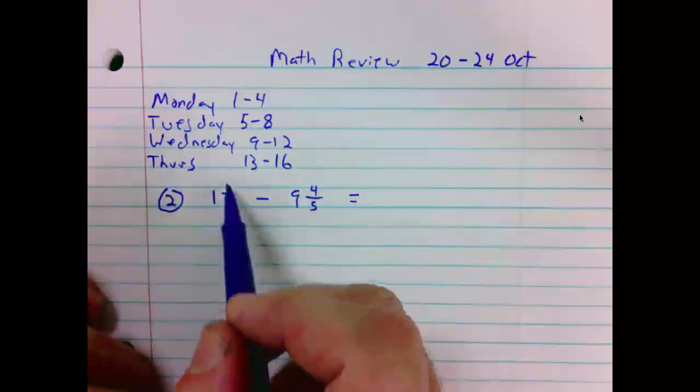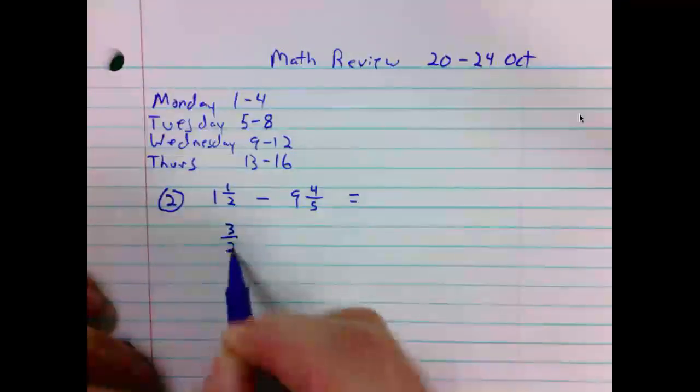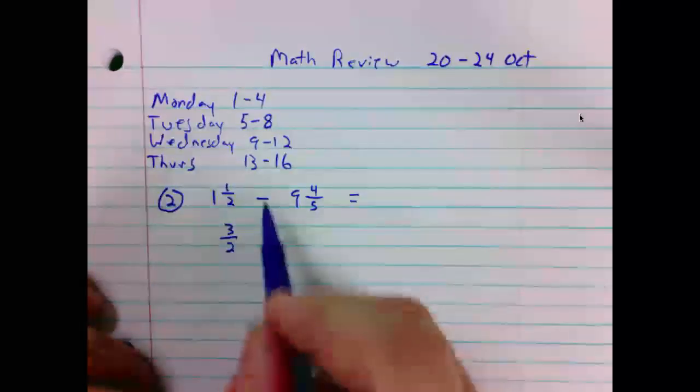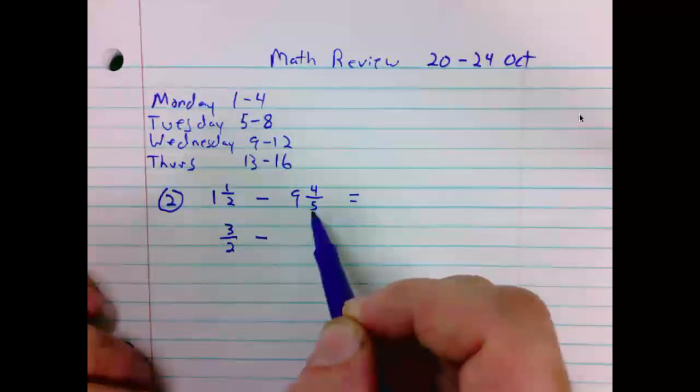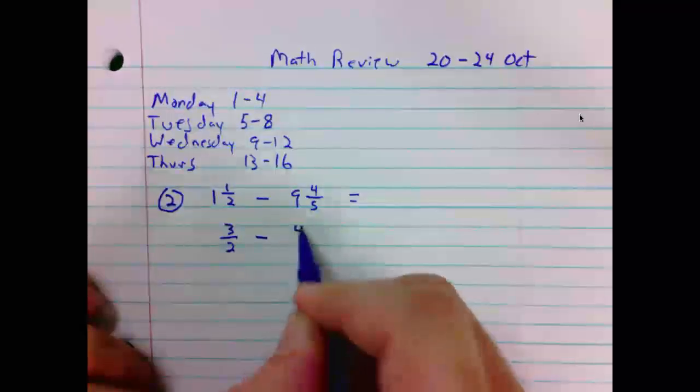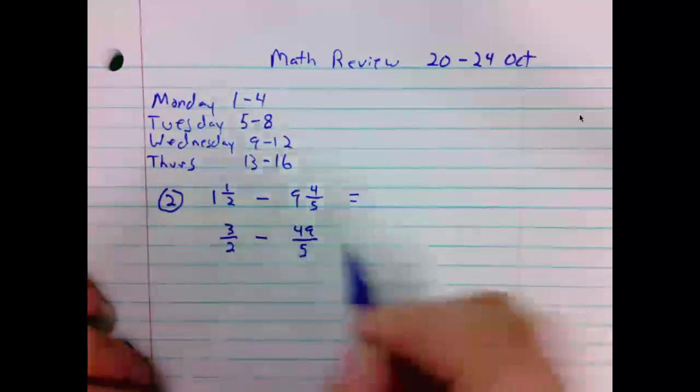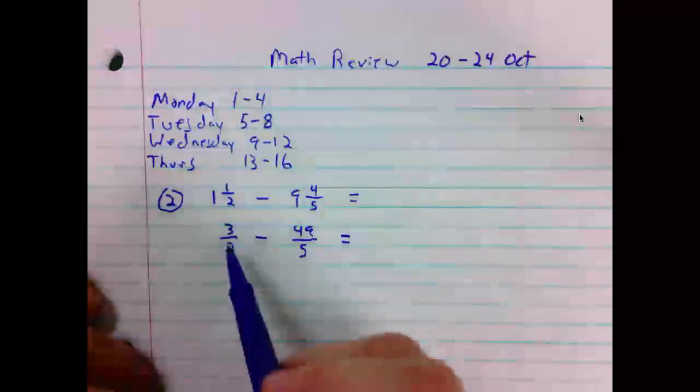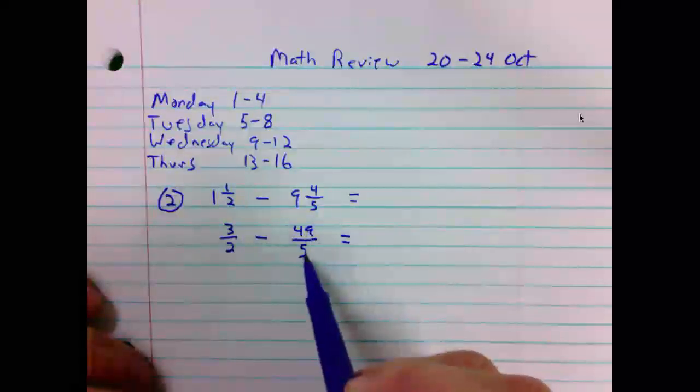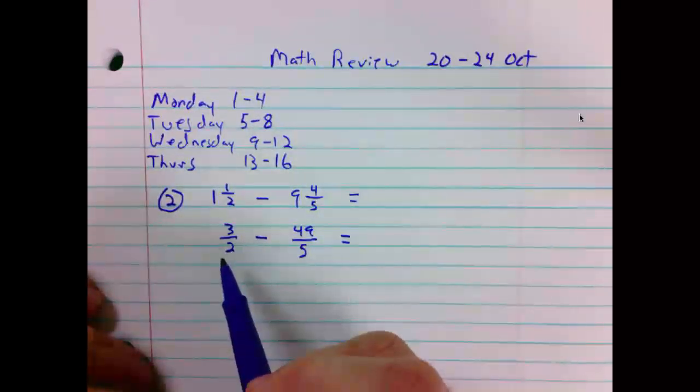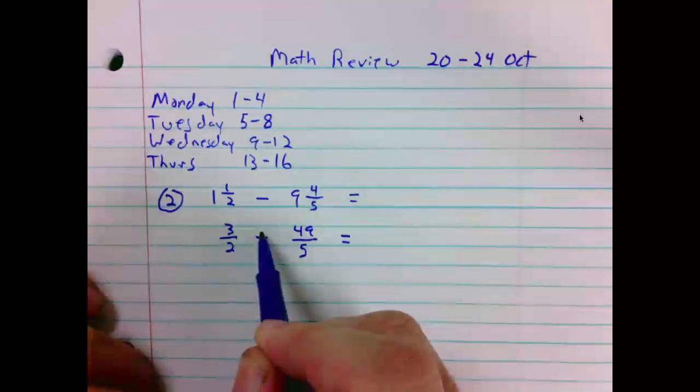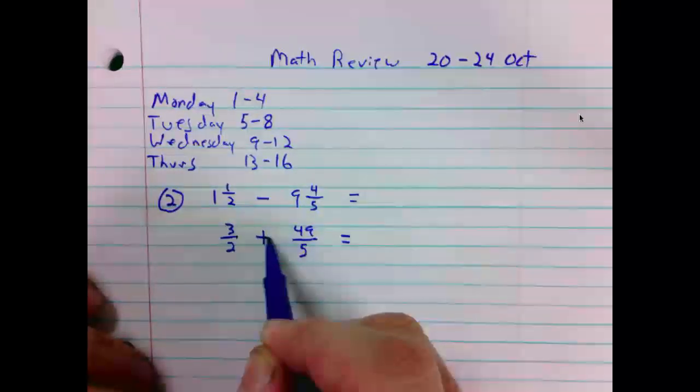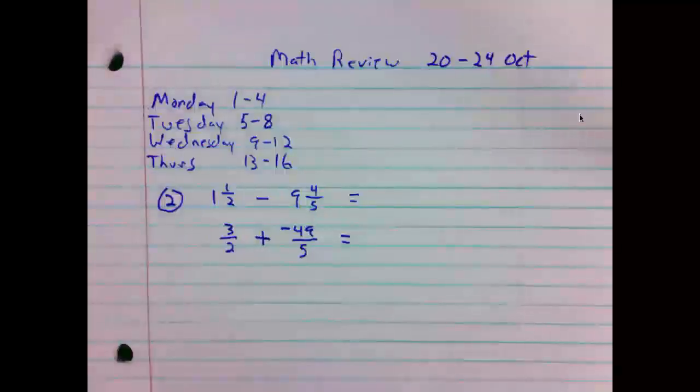1 times 2 is 2 plus 1 is 3. 1 and a half is equal to 3 over 2 minus 9 and 4 fifths. 9 times 5 is 45 plus 4 is 49. 49 over 5. So we have 3 halves minus 49 over 5. We will employ our keep change change rule when dealing with subtraction, keeping three halves the same, changing subtraction to an addition, changing the sign of the second term.